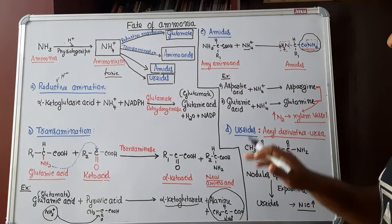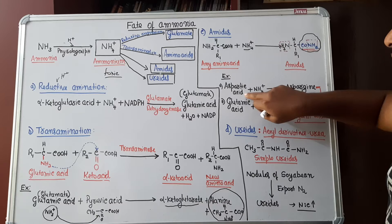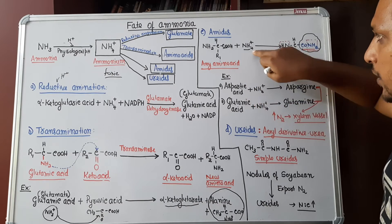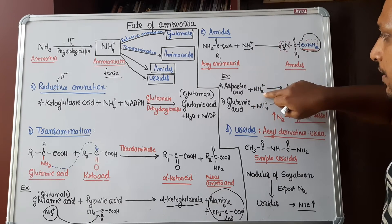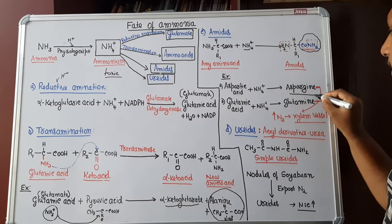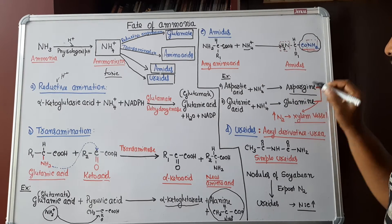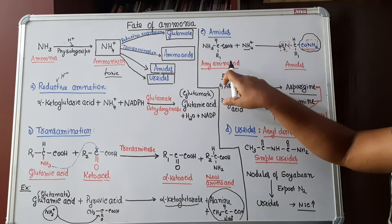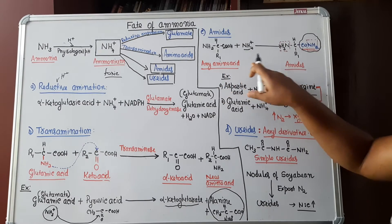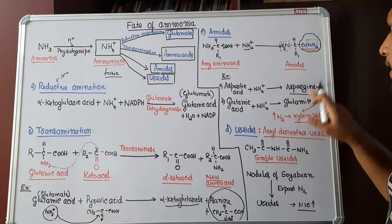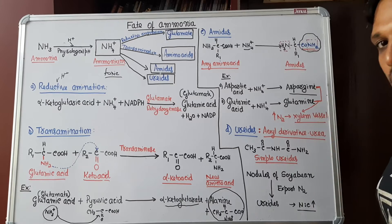Let us take example. Any amino acid, if you take aspartic acid to that, if you add ammonium, then there will be formation of amide known as asparagine with high nitrogen content. Similarly, if you take glutamic acid, if you add ammonium ion, there will be formation of glutamine, one more amide can be formed.